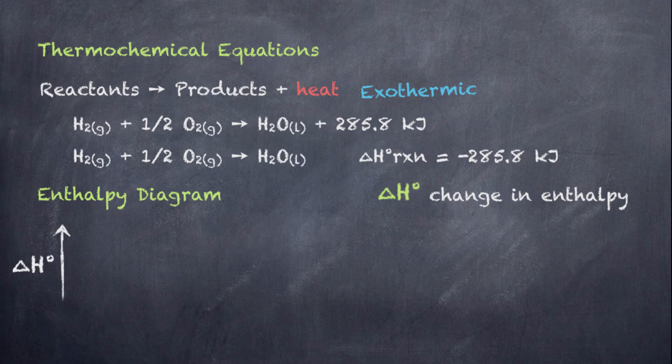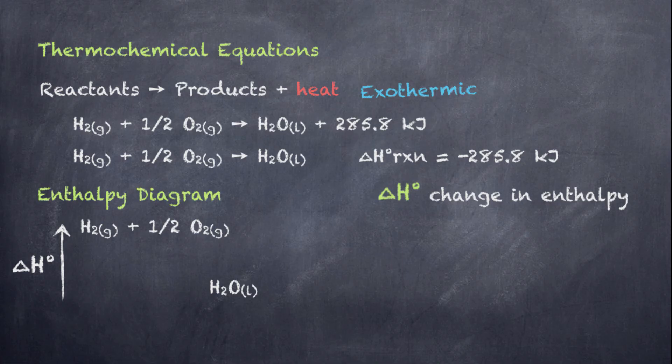And we can come up with something called an enthalpy diagram to represent this change in enthalpy. Now, for a reaction such as this, which is exothermic, we are going to have reactants that are higher in energy than those of the products. For an endothermic reaction, the opposite would be true. We would have products that are higher in enthalpy than the reactants.